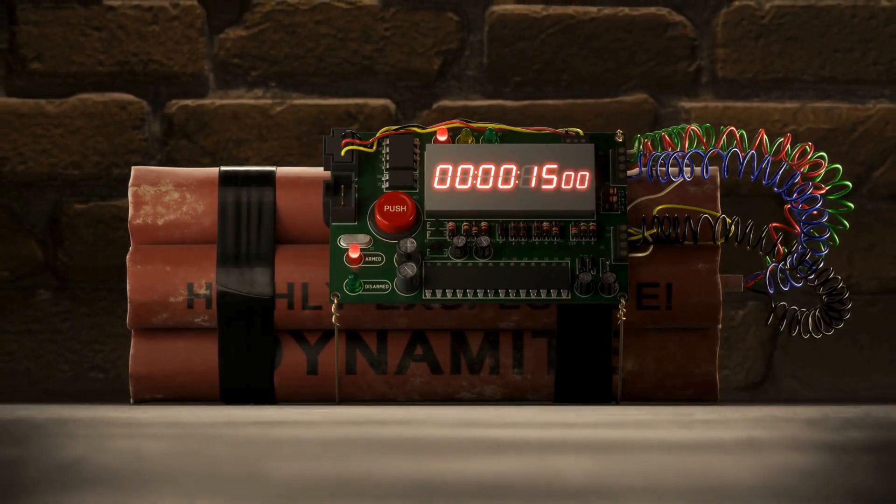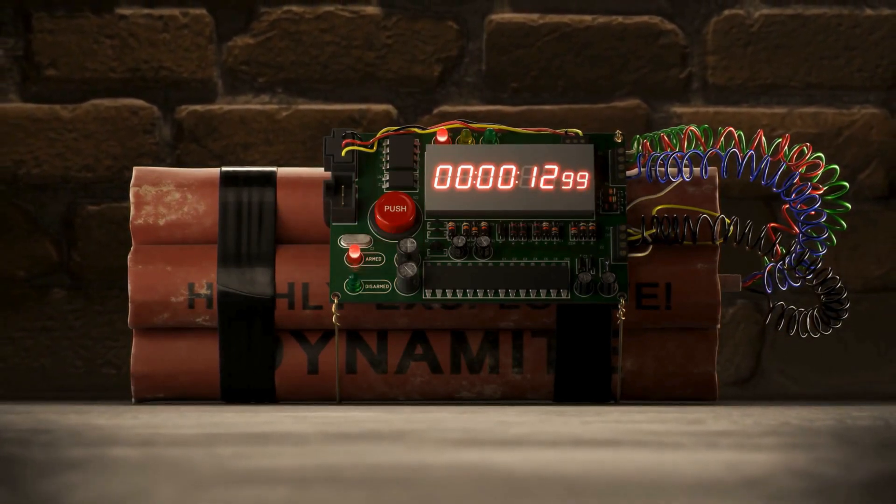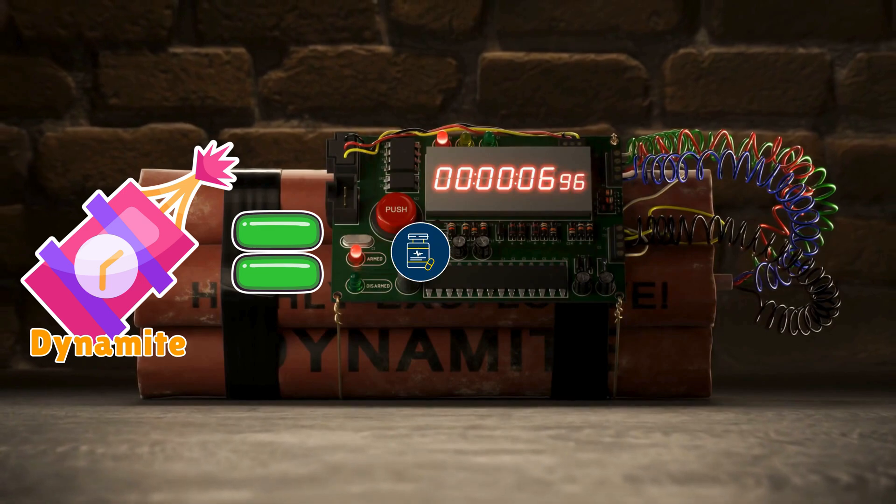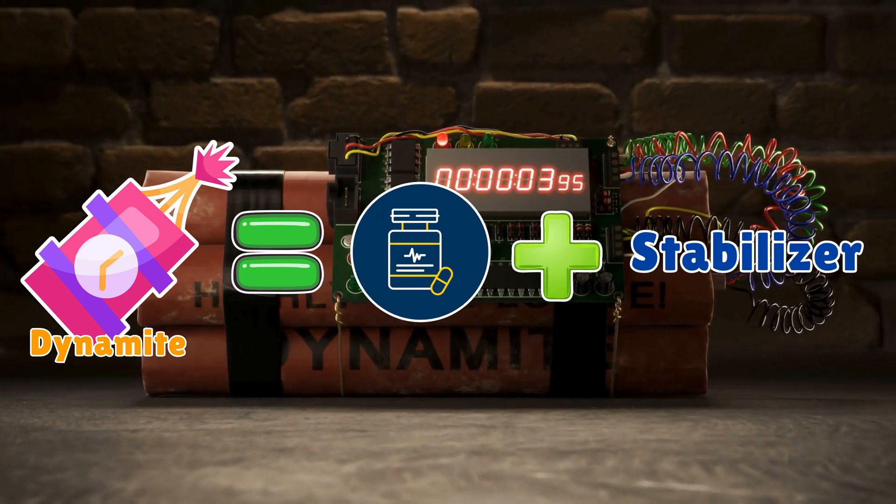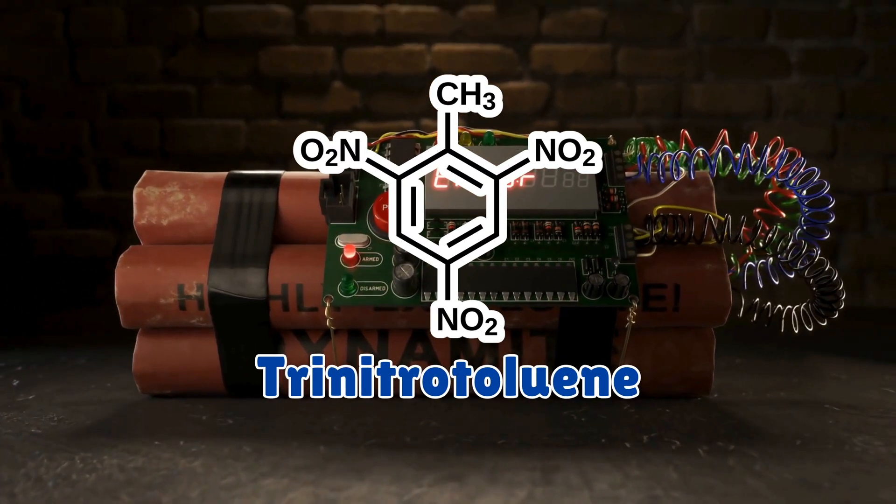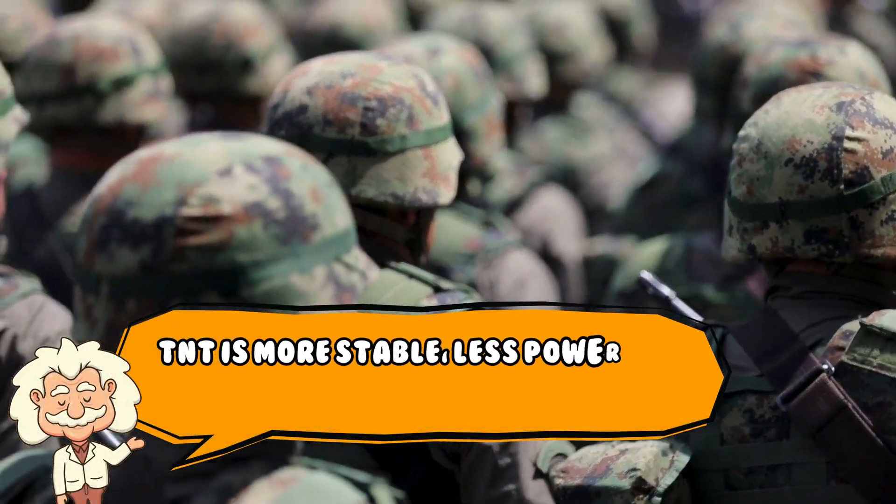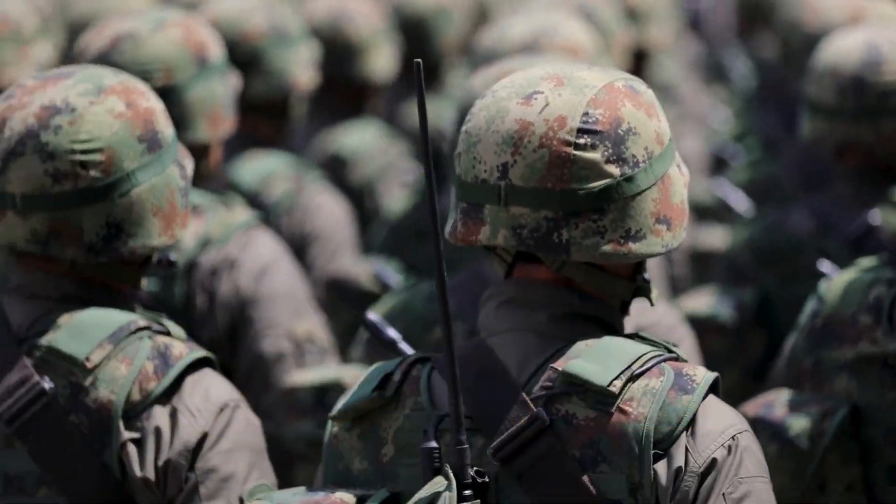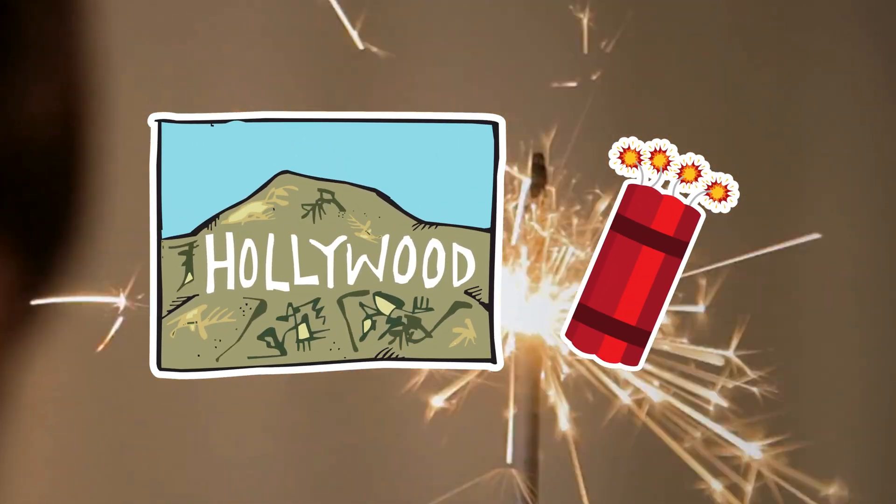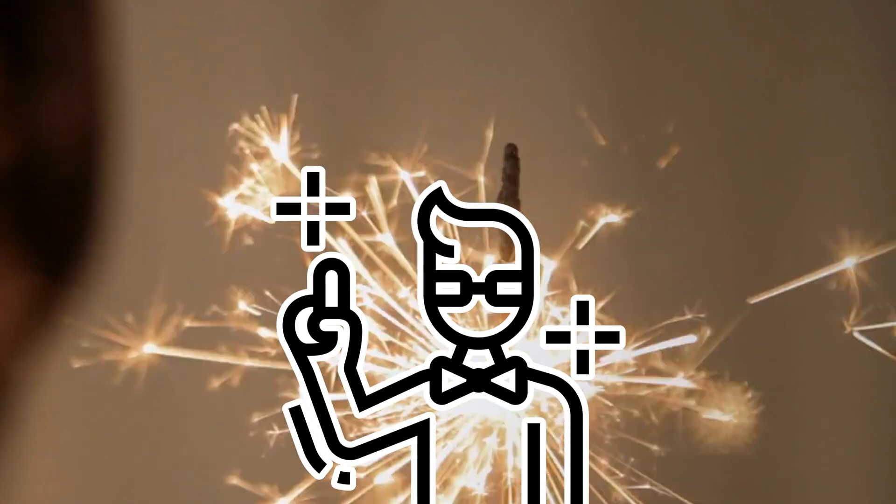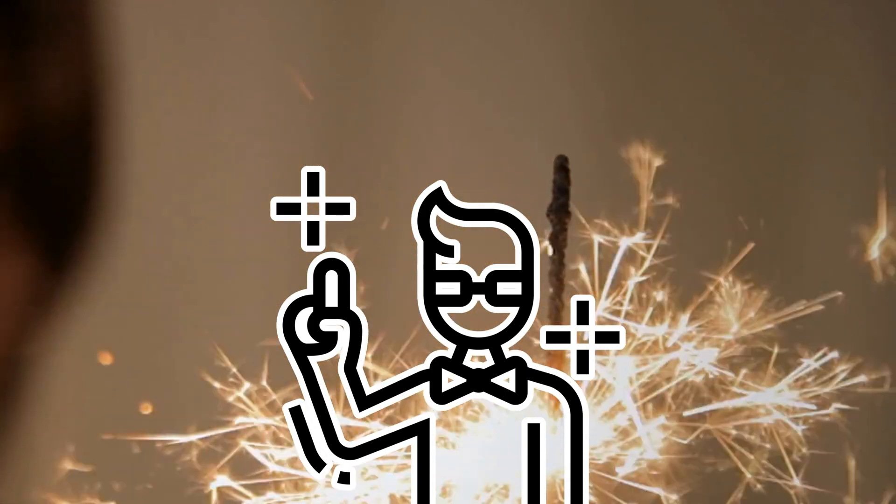This is where things get spicy. People often use dynamite and TNT interchangeably, but they're not the same thing. Dynamite equals nitroglycerin plus stabilizer. Thanks, Nobel. TNT equals trinitrotoluene, a completely different chemical compound. TNT is more stable, less powerful, but easier to handle and store. The military loves TNT. Hollywood loves dynamite. And now, you can be the know-it-all who corrects people at parties. Note, this may not make you popular.